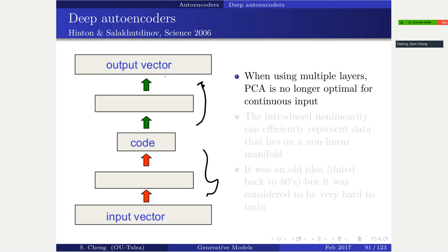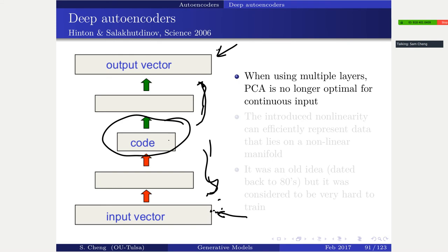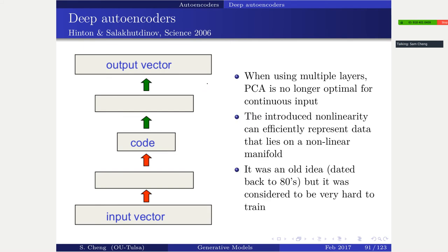What's interesting about autoencoders is they're self-supervised - unsupervised learning. You plug in whatever data you have at both input and output, training the model so output equals input. This means the bottleneck layer must have compressed all the information of the original input, otherwise it can't recover back to the original. This idea dates back to the 1980s.